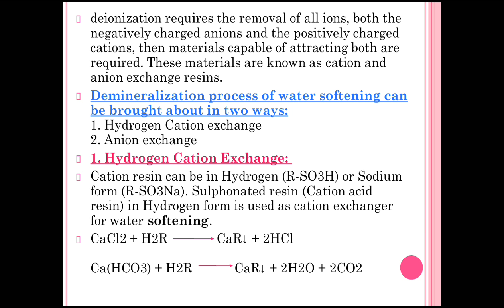The demineralization process of water softening can be brought about in two ways: first is the hydrogen cation exchange, and second is the anion exchange. In hydrogen cation exchange, the cation resins can be in the hydrogen form, i.e., RSO₃H, or the sodium form, RSO₃Na — these are the sulfonated resins. The cationic acid resin in hydrogen form is used as a cation exchanger for water softening. The cation exchange resins are acidic resins because the acid has H⁺ ions; whenever they are in contact with water, H⁺ ions are released and cationic impurities present in water are captured.